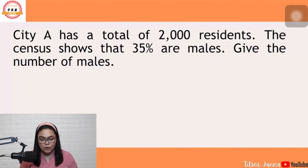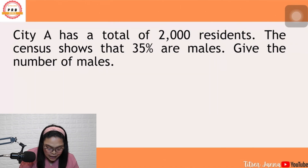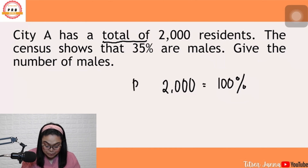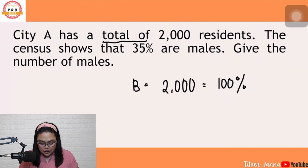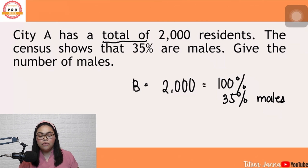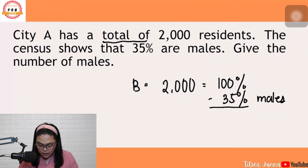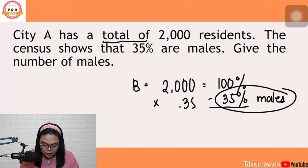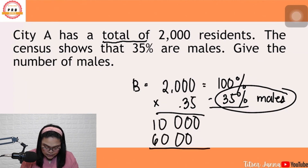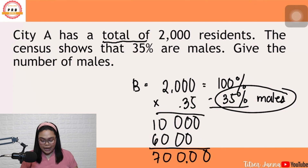Let's try the other problem. Sabi dito, CTA has a total of 2,000 residents — ginamit na yung word na total, yung populasyon, mga nakatera sa CTA. So again, we consider this as 100% — our base. Sabi dyan, the census shows that 35% are males. Ang tanong sa problem is: give the number of males. Kailangan mo bang i-minus sa 100%? Hinahanap ba yung female? Syempre hindi na. So, 35% times 2,000 gives us 700.